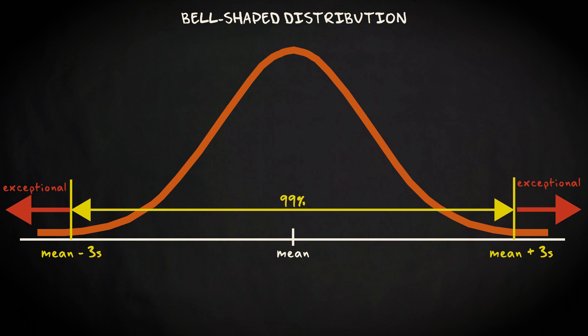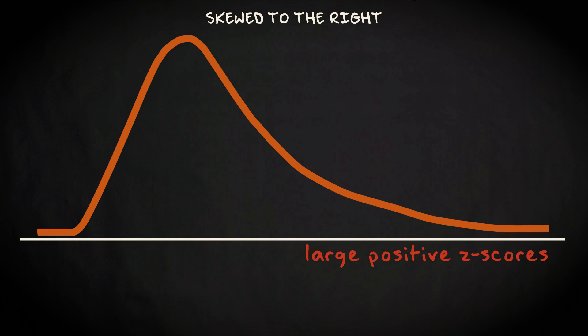However, if a distribution is strongly skewed to the right, as in this graph, large positive z-scores are more common, because there are more extreme values on the right side of the distribution.